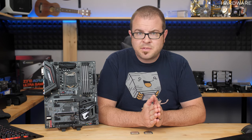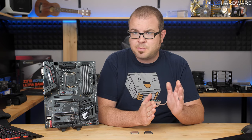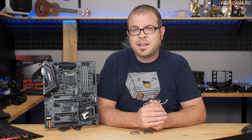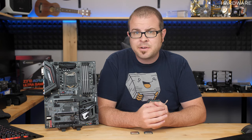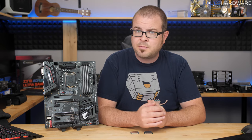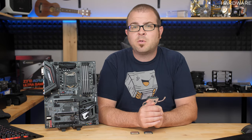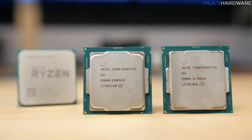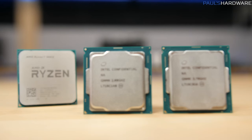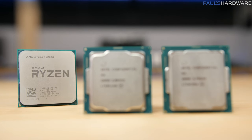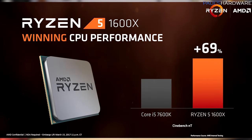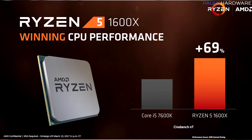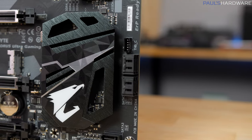I like to let the numbers speak for themselves, so the benchmarks will be my focus today as I pit the 8700K and 8400 against Intel's previous mainstream flagship, the 4-core, 8-thread 7700K, as well as AMD's Ryzen 7 1800X with 8 cores and 16 threads, and AMD's Ryzen 5 1600X with 6 cores and 12 threads.